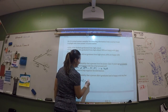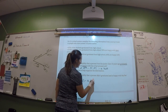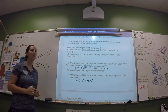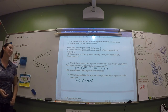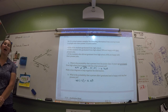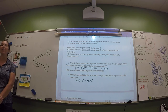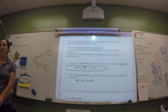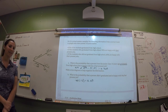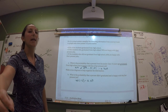The answer is 0.09 — so 9% of the people surveyed are happy and didn't graduate. So 9% of the people surveyed are happy and did not graduate from high school.